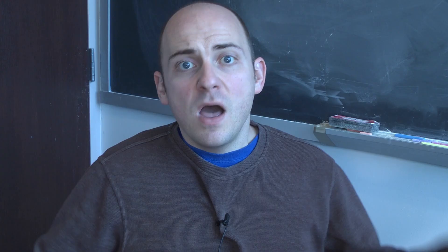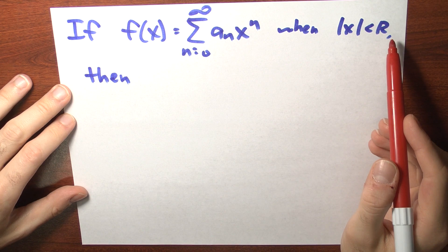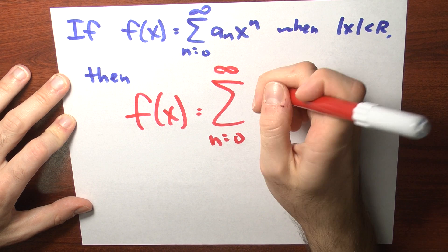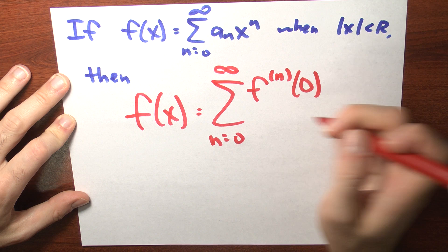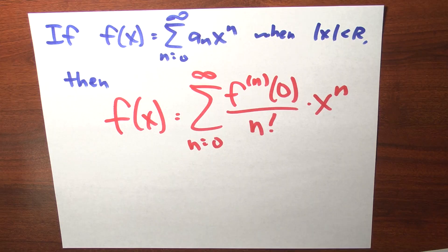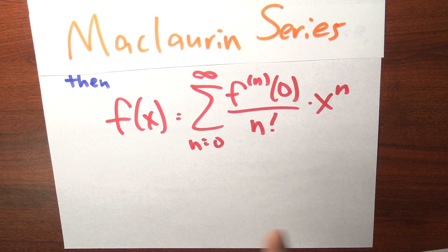Let me say this differently. If this function f can be written as a power series on the interval from minus r to r, then f of x is equal to the sum n goes from 0 to infinity of the nth derivative of f at the point 0, divided by n factorial, times x to the n. This has a name — or rather, two names.